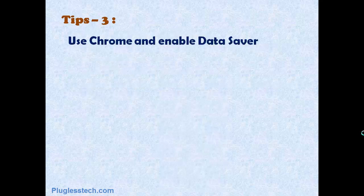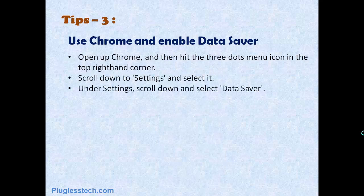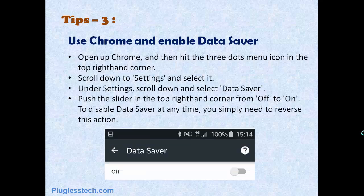Tip 3: Use Chrome and enable Data Saver. Open up Chrome and then hit the three dots menu icon in the top right-hand corner. Scroll down to Settings and select it. Under Settings, scroll down and select Data Saver. Push the slider in the top right-hand corner from Off to On. To disable Data Saver at any time, you simply need to reverse this action.